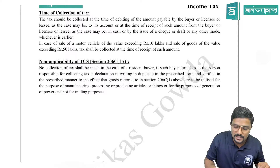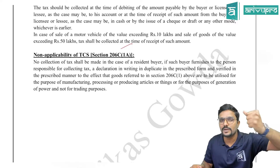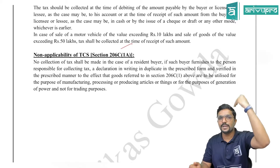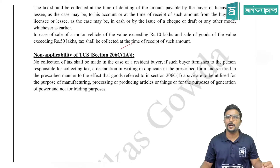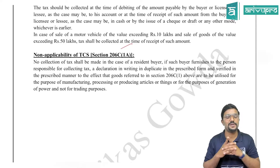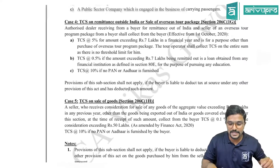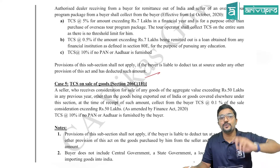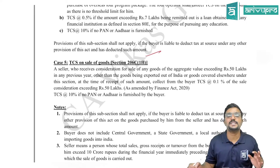As per Section 206C(1A), there is a non-applicability of TCS. When TDS is applicable on any particular transaction, TCS will not be applicable on the same transaction — that cross-application clarification was already discussed in our May 22 statutory update. Especially when it comes to Section 194Q, those transactions can also be covered in TCS under Section 206C(1H). From the 194Q point of view, we check from the buyer's side: is he deducting TDS? If not, we go back and check Section 206C(1H).